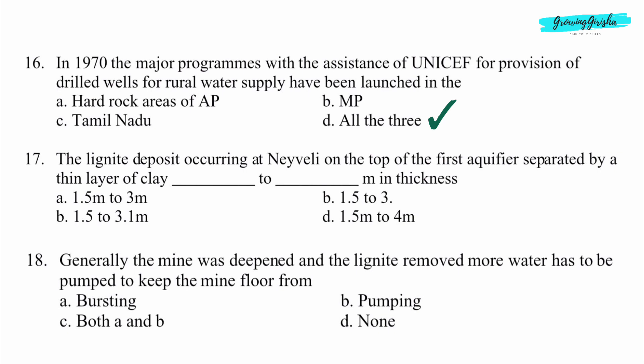Question 17. The lignite deposit occurring at Neve Valley on the top of the first aquifer separated by a thin layer of clay dash to dash meters in thickness. Option A: 1.5 meters to 3 meters.